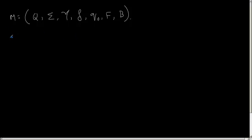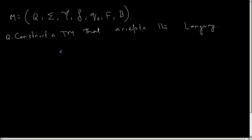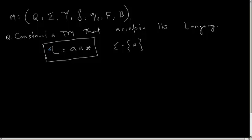The question is, construct a Turing machine that accepts the language L is equal to A A star, where the alphabet set sigma is A. First of all, the language A A star is a regular language or not? Tell me.